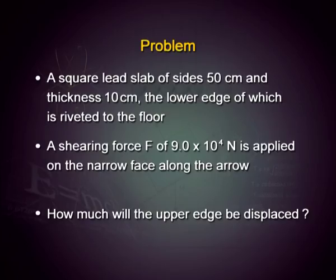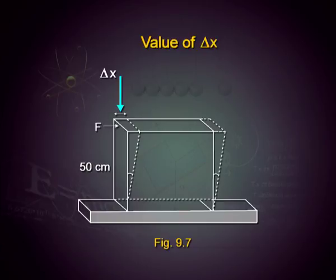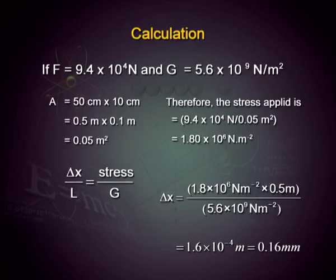Consider a square lead slab of size 50 centimeters and thickness 10 centimeters, with the lower edge riveted to the floor. A shearing force of 9 × 10⁴ Newtons is applied on the narrow face. The upper edge displacement works out to 0.16 millimeters — a very small value that must be carefully measured, but it gives an idea of how much shearing force is required to cause or prevent deformation.